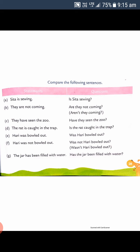Now we again have to convert statements into questions. 'Sita is swinging' — in this sentence the helping verb is 'is', so we start from the helping verb: 'Is Sita swinging?' Sita is a proper noun, so it is written in capital. 'They are not coming' becomes 'Are they not coming?' — put question mark.